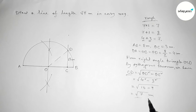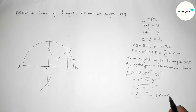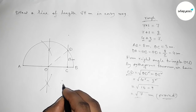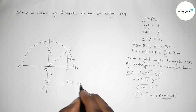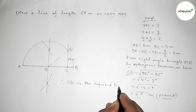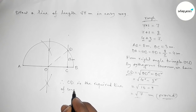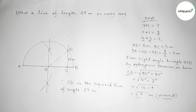Therefore the length CD equals root 7 centimeter. CD is the required line of length root 7 centimeter. By this way you can draw a line of length root 7 centimeter in an easy way. That's all — thanks for watching. If this video is helpful to you, please share it with your friends.